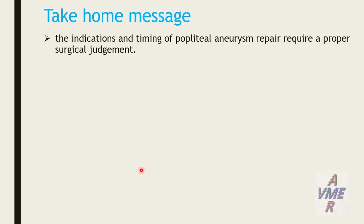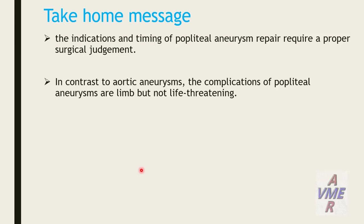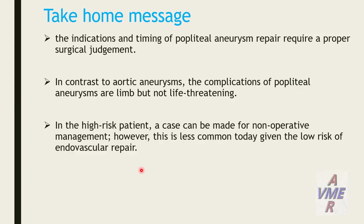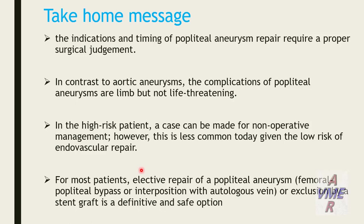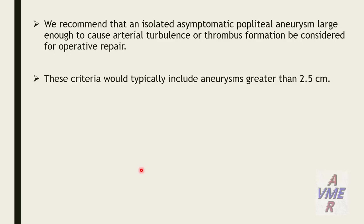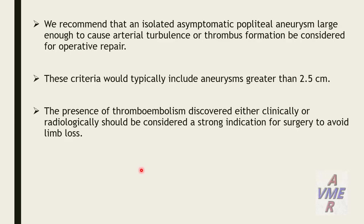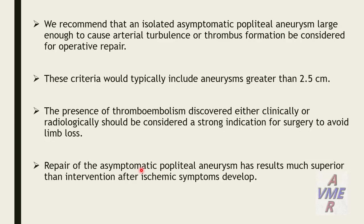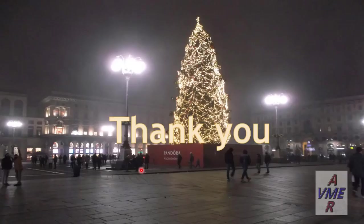The indication and timing of popliteal aneurysm repair require proper surgical judgment. In contrast to aortic aneurysm, complications of popliteal artery aneurysm are significant but not life-threatening. In the highest-risk patient, non-operative management can be considered; however, this is less common today given the low risk of endovascular repair. For most patients, active repair — femoral-popliteal bypass or interposition with autogenous vein or occlusion by stent graft — is the definitive and safe treatment. We recommend that an isolated asymptomatic popliteal artery aneurysm large enough to cause arterial thrombus formation be considered for operative repair, typically including aneurysms greater than 2.5 cm. Presence of thromboembolism, discovered clinically or radiologically, should be considered a strong indicator for surgery to avoid limb loss. Repair of asymptomatic popliteal artery aneurysm has results superior to intervention after ischemic symptoms develop. Thank you very much.